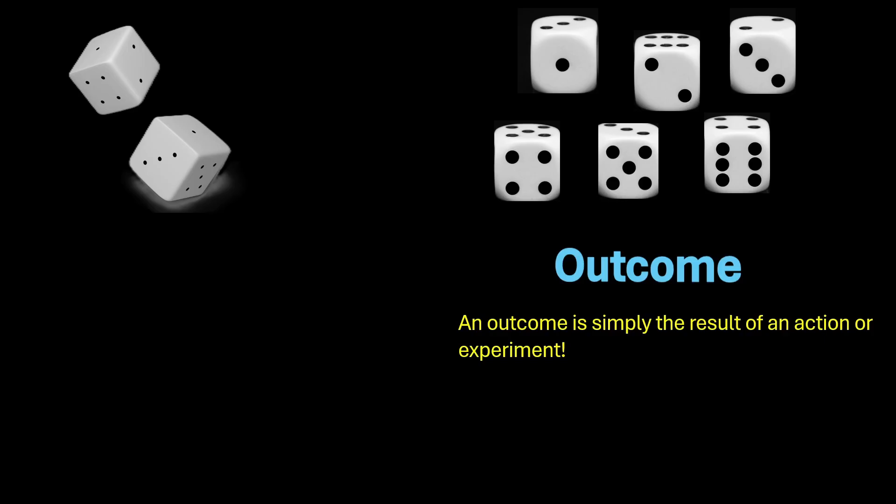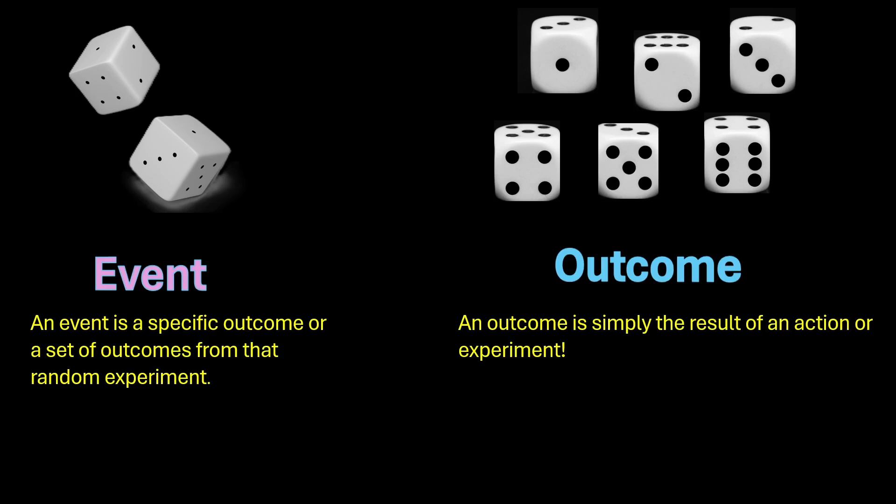Now, there is another term which we will come across very often which is called event. An event is a specific outcome or a set of outcomes from that random experiment. For example, let's take the example of rolling a die. While rolling a die is a random experiment, rolling a die and getting a 4 is an event. Similarly, tossing a coin is a random experiment which can have heads and tails as outcomes, but tossing a coin and getting a head is an event.